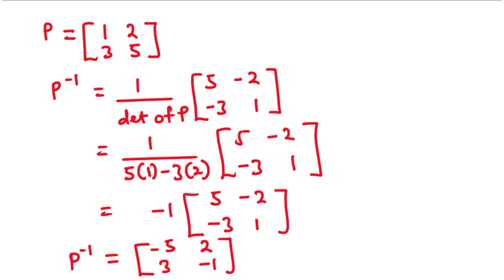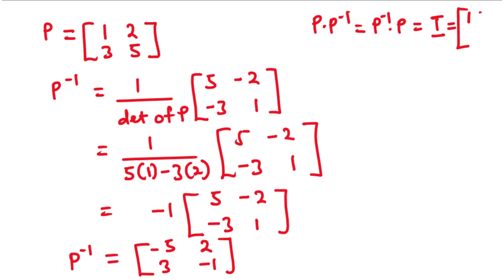Notice that a matrix P times its inverse is equal to the inverse of matrix P times the matrix itself, and that is equal to I, which is the unit matrix or the identity matrix. The unit matrix is given by 1, 0, 0, 1. So basically, if you multiply a matrix by its inverse, you get the identity matrix.